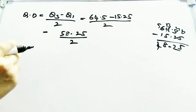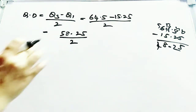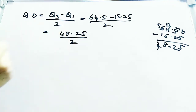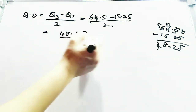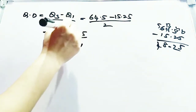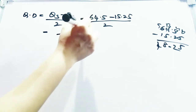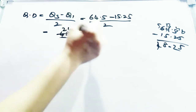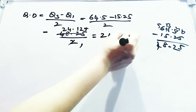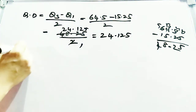The numerator is 48.25. Dividing: 48.25 / 2 = 24.125. That is your quartile deviation value.